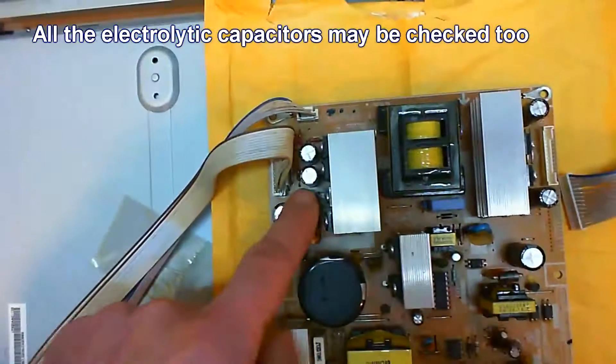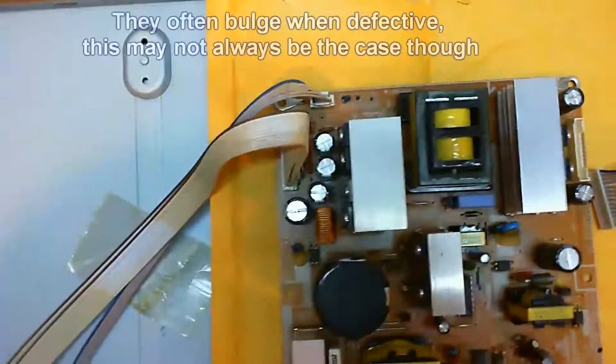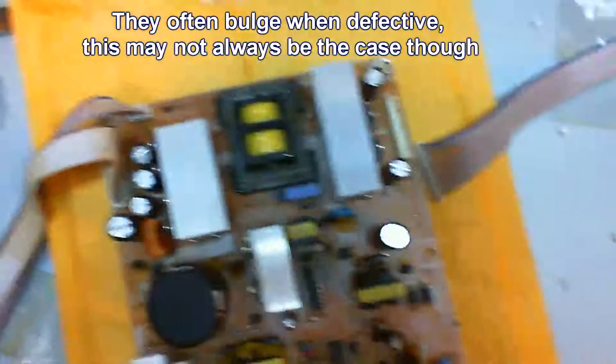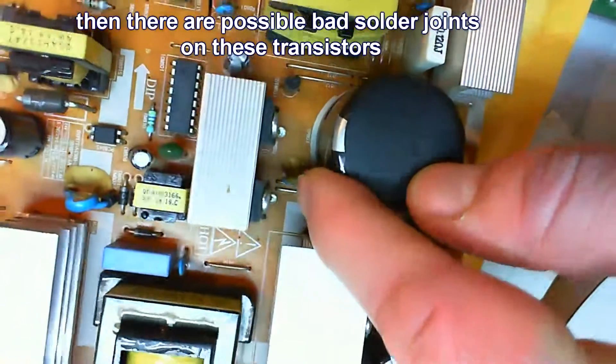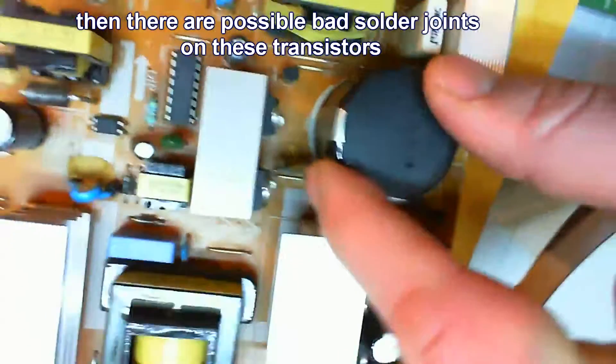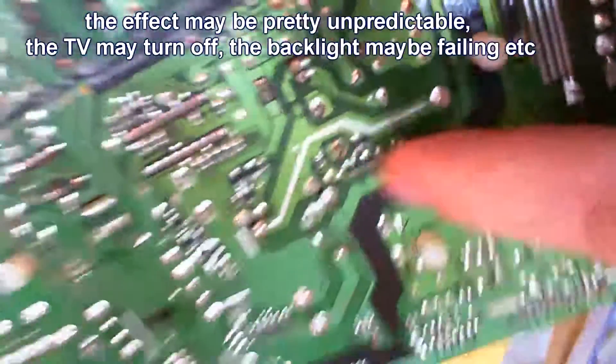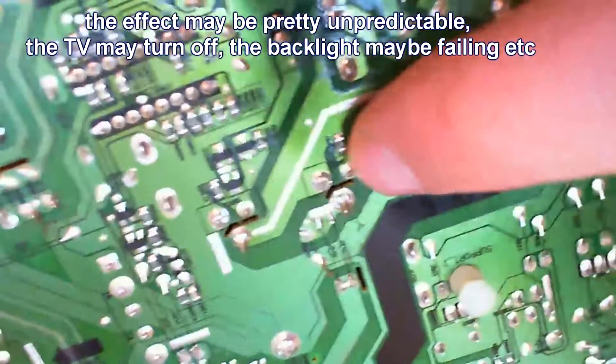Then there are these electrolytic capacitors here, which need to be checked. Next, there may be these two transistors here, which may have bad solder joints. The effects of bad solder joints are pretty unpredictable. The TV may be switching on and off in a random fashion or it doesn't turn on.